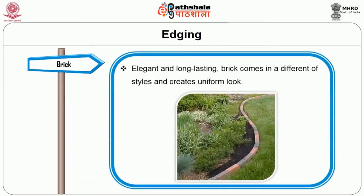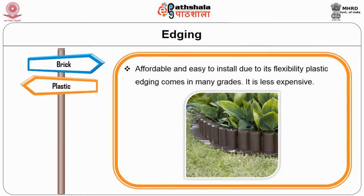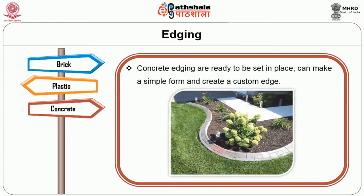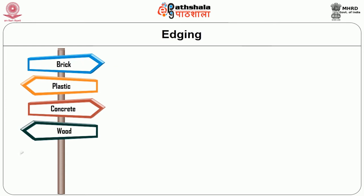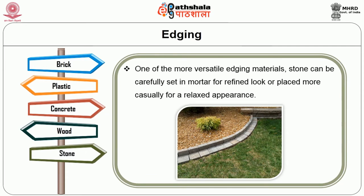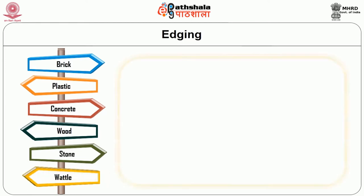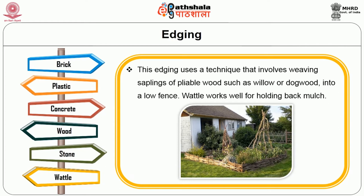Brick — elegant and long-lasting, comes in different styles and creates a uniform look. Plastic — affordable and easy to install; due to its flexibility, plastic edging comes in many grades and is less expensive. Concrete edging is ready to be set in place and can make a simple form creating a custom edge. Wood — affordable and easy to work with for straight lines; it adds an informal organic look. Stone — one of the more versatile edging materials; it can be carefully set in mortar for a refined look or placed more casually for a relaxed appearance. Wattle — this edging uses a technique that involves weaving saplings of pliable wood such as willow or dark wood into a low fence; wattle works well for holding back mulch.